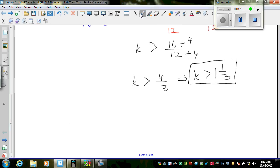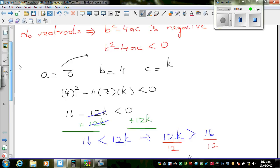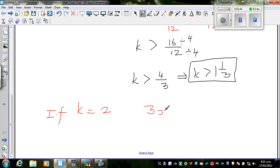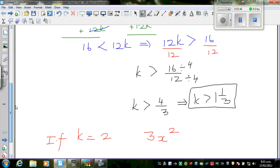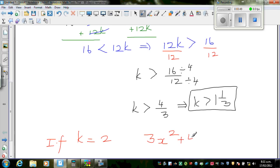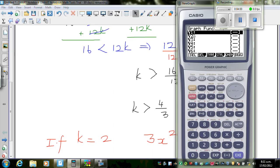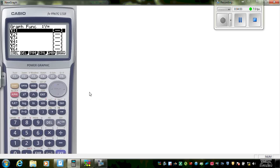Let us check our answer. Suppose if k is 2, and 2 is greater than 1 and 1/3. Let's say k equals 2. So what's our equation? Our equation becomes 3x² + 4x + 2. So let us use a graphic calculator. This is equal to 0.